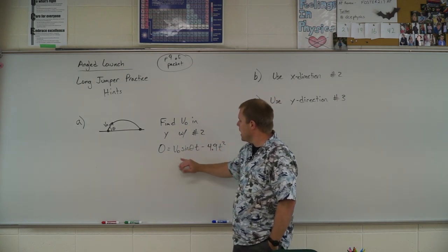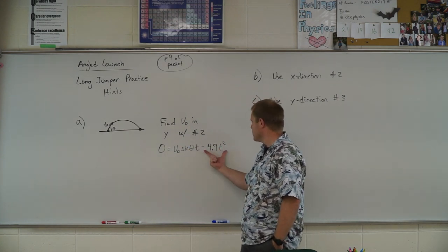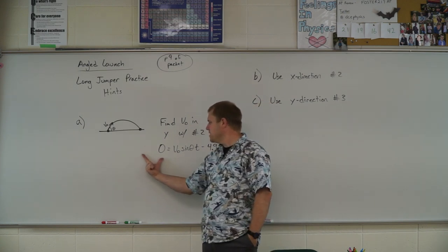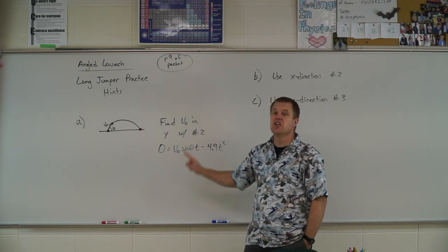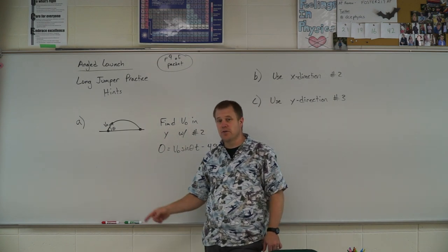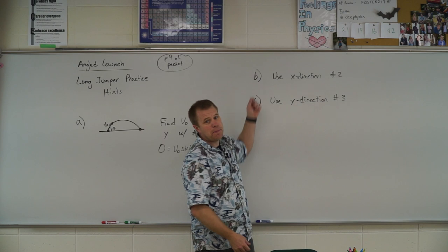So go ahead, do your little bit of algebra, solve for that v naught. So you're going to add this 4.9 t squared over, divide the t, divide the sine of theta and you have your v naught. Store that value, store that number in your calculator because you are going to need it for part b and c.